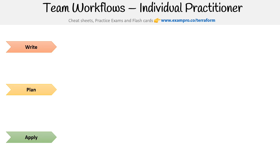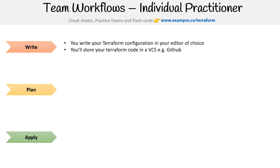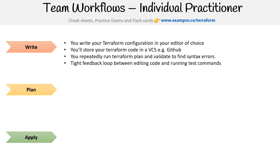Let's take a look at a Terraform team workflow for a single person — an individual practitioner. Starting with the write step: you're writing your Terraform configuration in your editor of choice on your computer, and storing your Terraform code in something like GitHub or some kind of version control system. You'll be repeatedly running terraform plan or terraform validate to find syntax errors. The great thing is you get a tight feedback loop between editing the code and running your test commands, because it's all on your local machine — no build servers or other services — so it's very fast and easy.